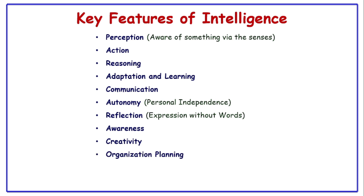Next is organizational planning, which refers to the process of setting goals, defining strategies, and allocating resources for an organization. It assumes a somewhat stable environment and focuses on predictability. One more feature is goal-directed problem solving, which is a fundamental aspect of intelligence. It is essentially the ability to use your thinking and actions to achieve a specific goal, especially in situations where there isn't an obvious solution.